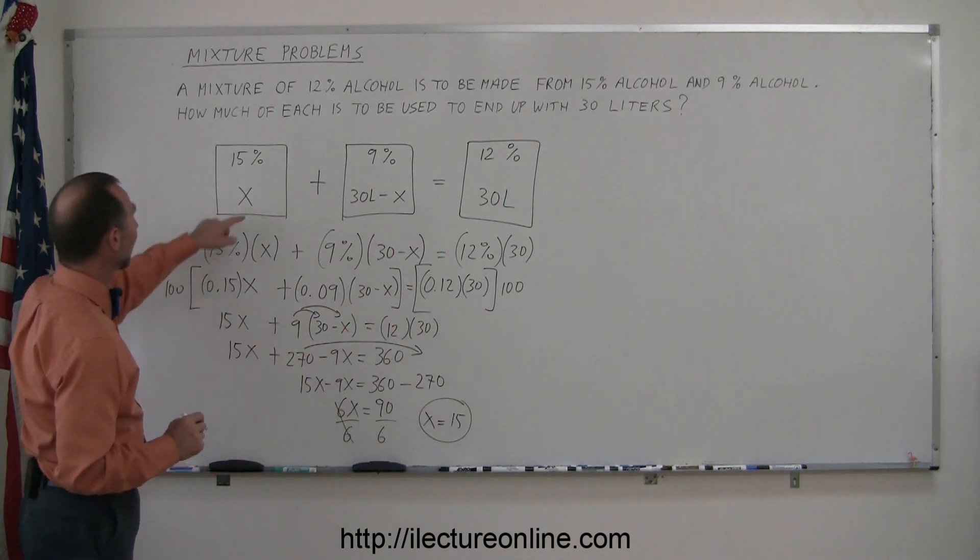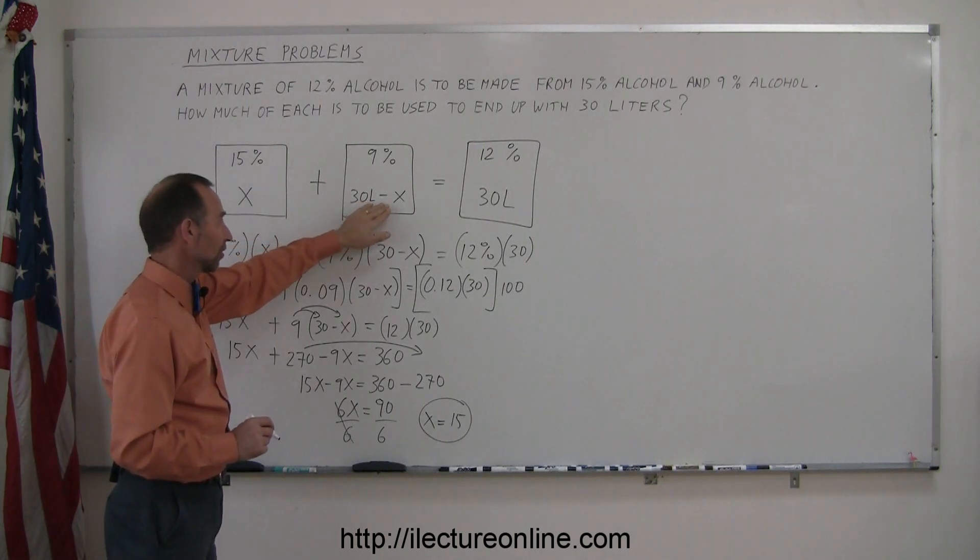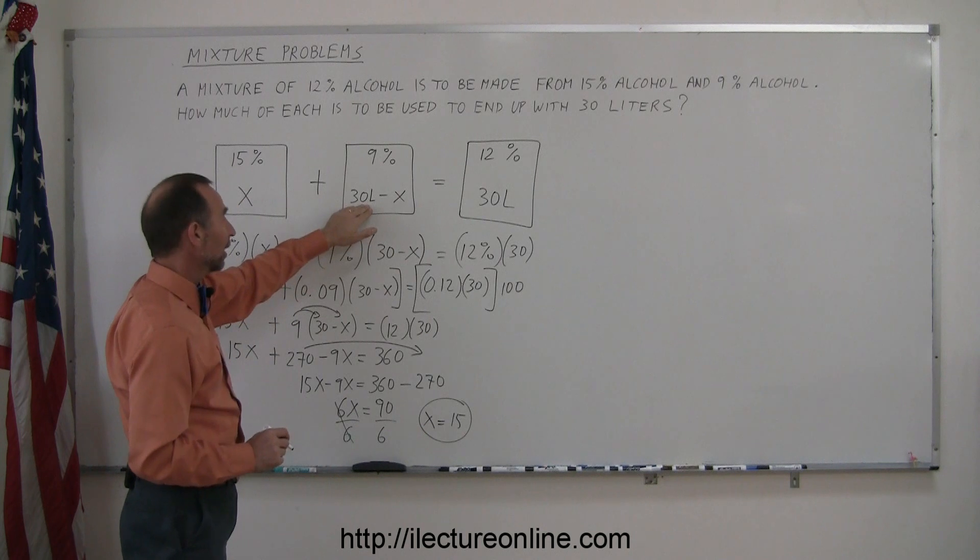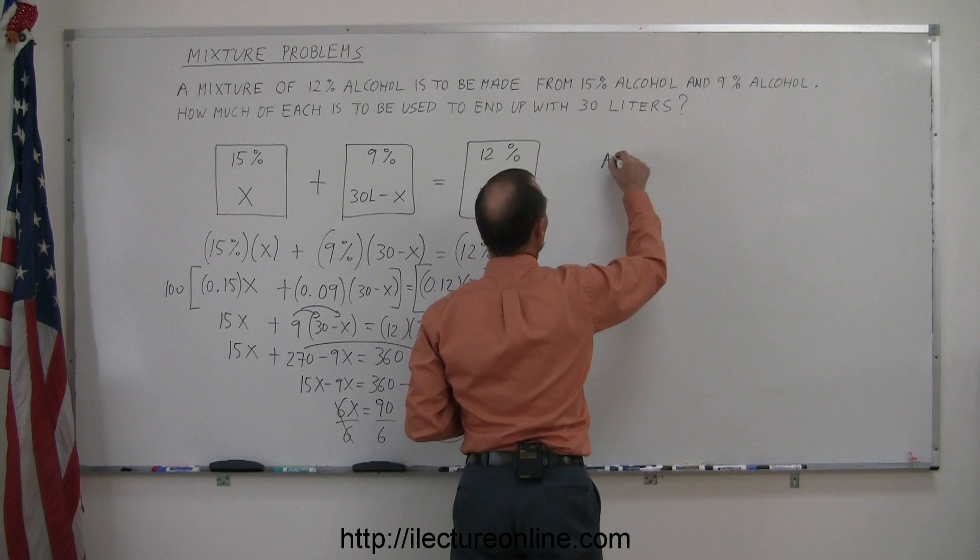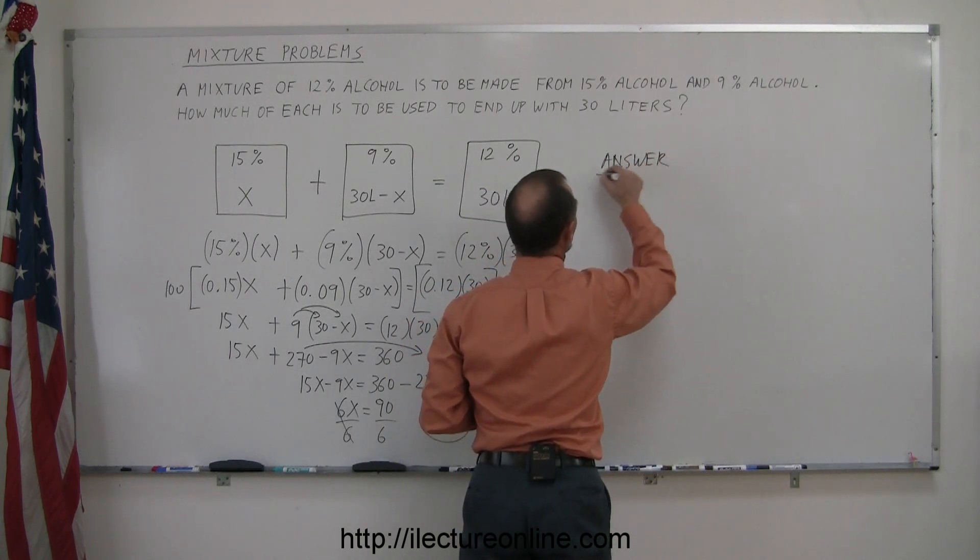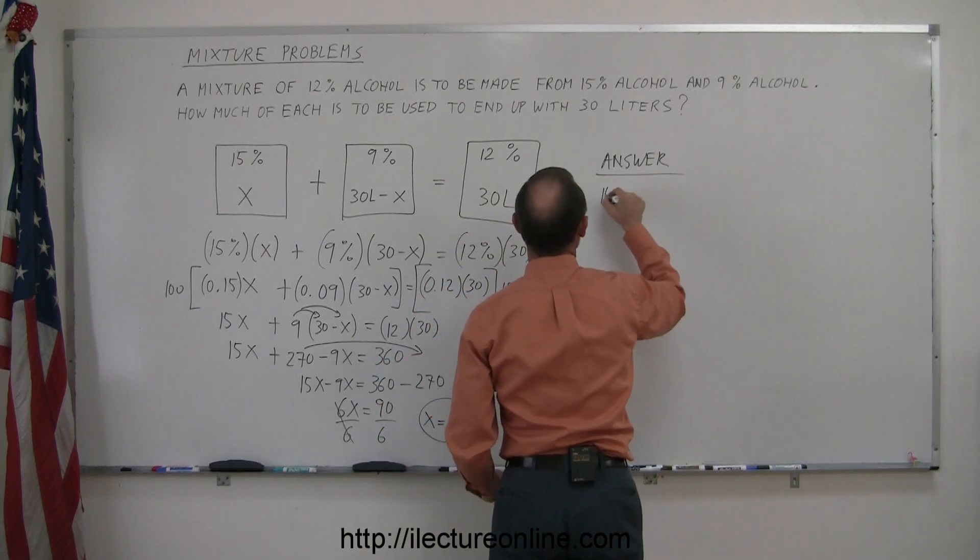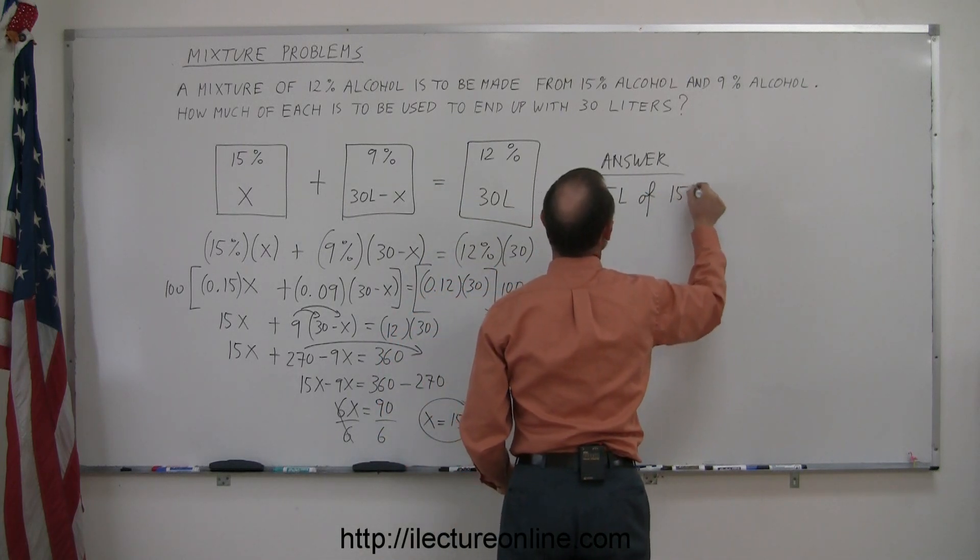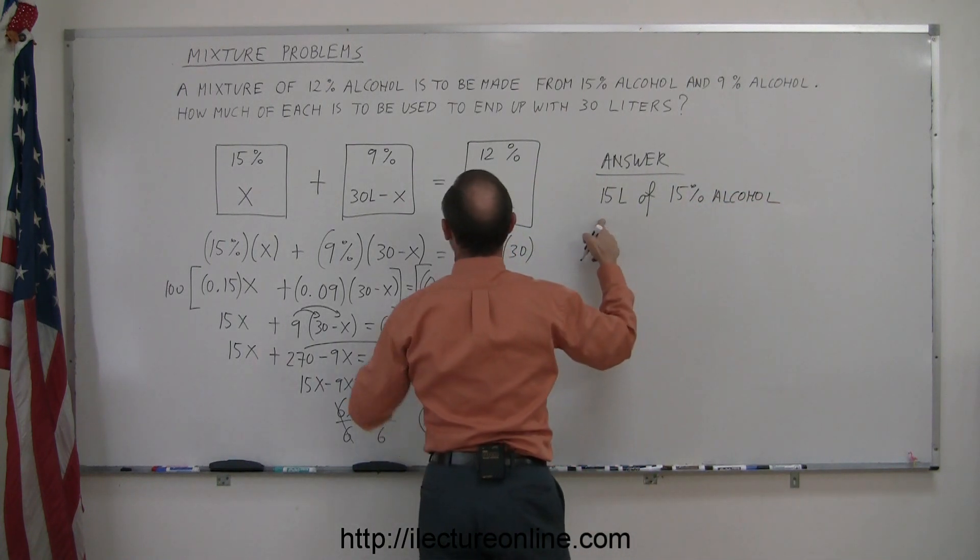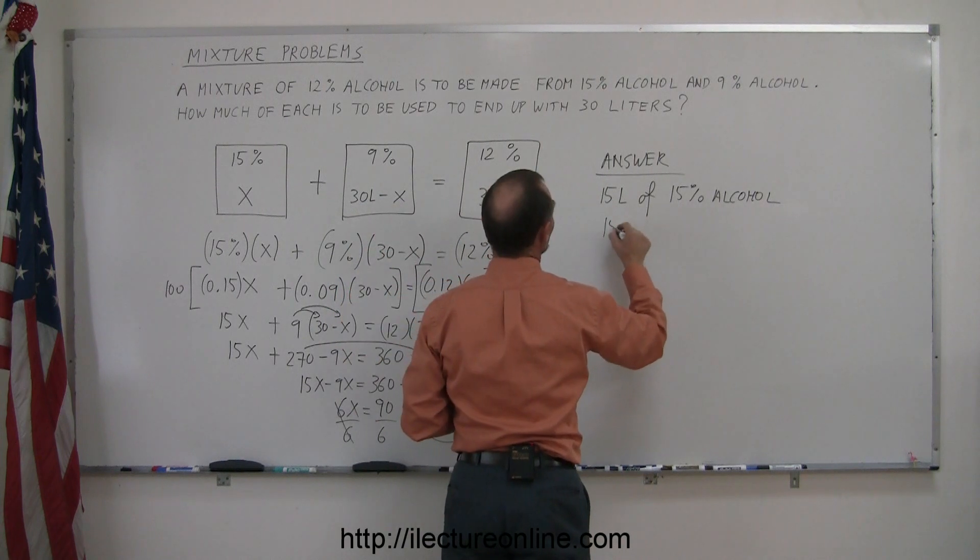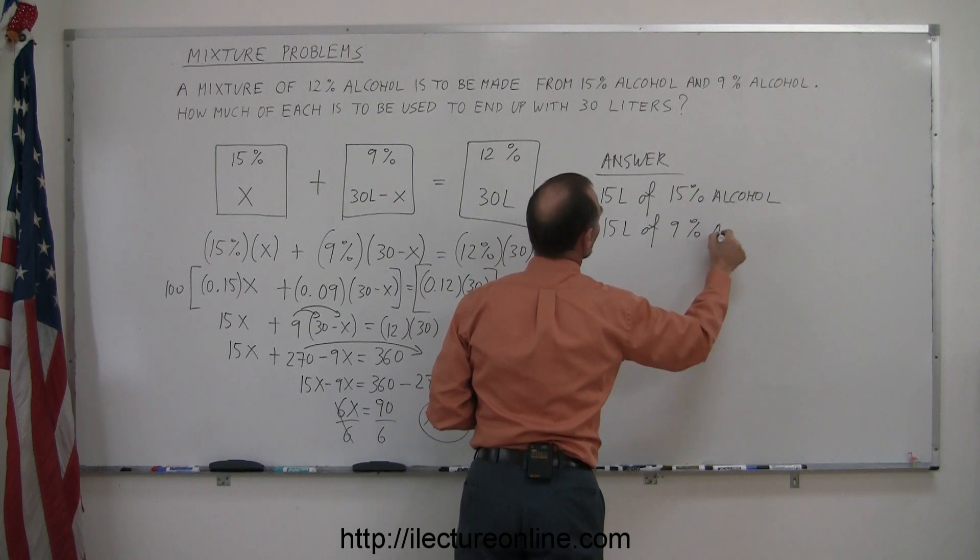Going back up here, X was the number of liters we had of the 15% solution. And 30 minus X, since X is 15, we also need 15 liters for the 9% solution. So the answer, since X is 15, we need 15 liters of the 15% alcohol solution. And 30 minus 15, that means 15 liters of the 9% alcohol solution.